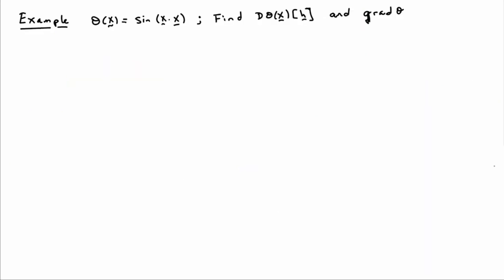So let's go ahead and look at an example just to make this concrete. I'm going to take a function theta of x, which is equal to the sine of x dot x. And let's go ahead and find the directional derivative. And then let's go ahead and determine what the gradient is.